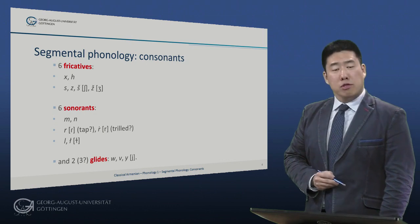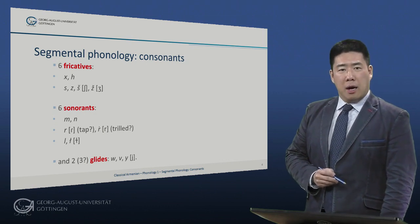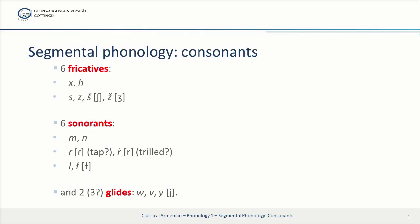There were also six fricatives, H and H transcribed respectively X and H, and S, Z, SH, and Z, the latter two transcribed with a haček over the S and Z.